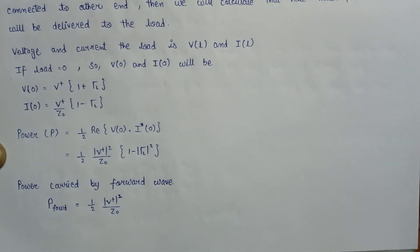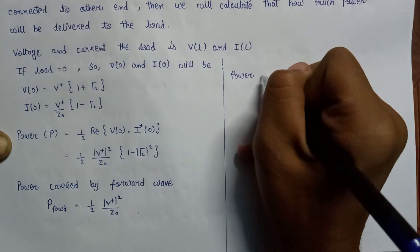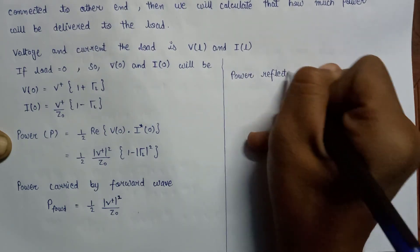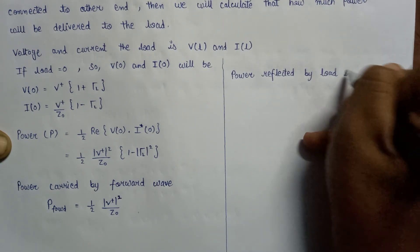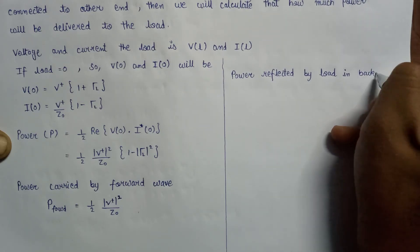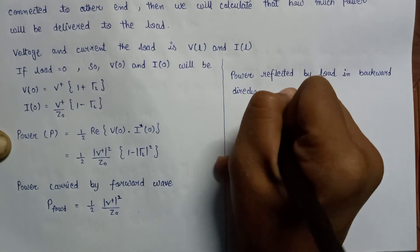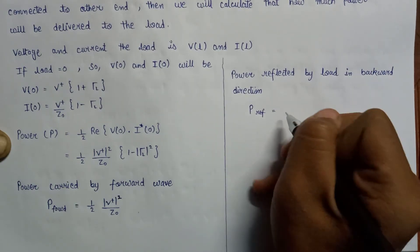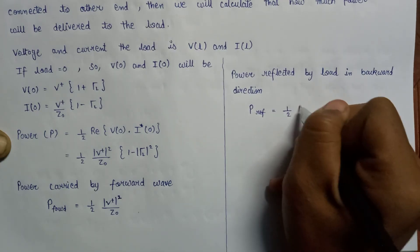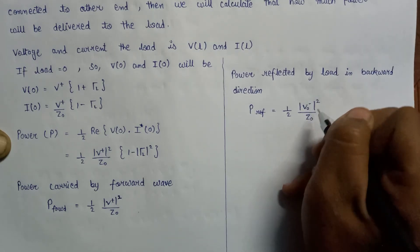The second type of power is the power reflected by the load in the backward direction, from the load side back to the input side. The reflected power P_reflected is equal to one-half times the magnitude of V0- squared over Z0.